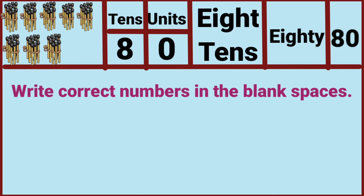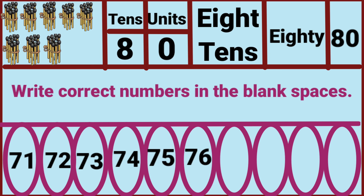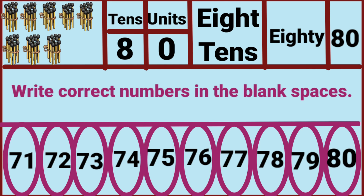Write the correct numbers in the blank spaces. Seventy-two is already given. Let's complete this: seventy-one, seventy-two, seventy-three, seventy-four, seventy-five, seventy-six, seventy-seven, seventy-eight, seventy-nine, eighty.